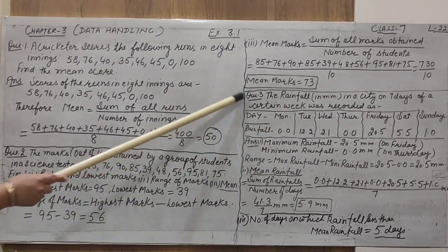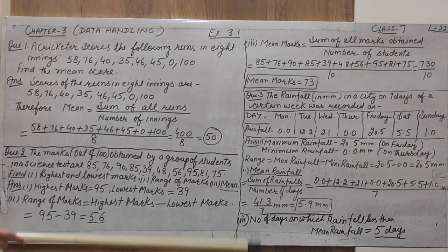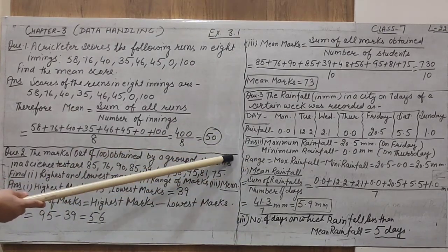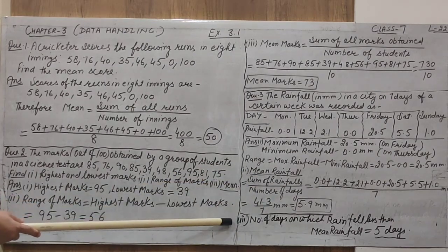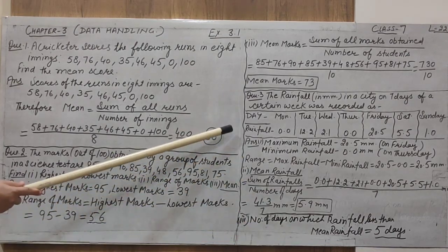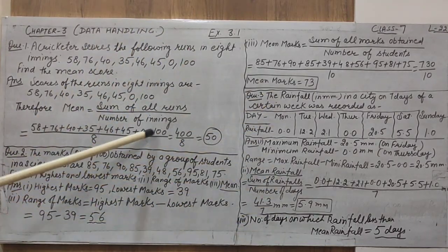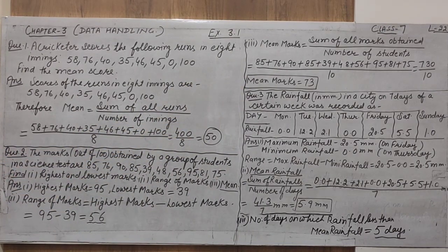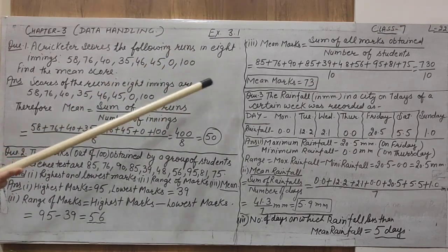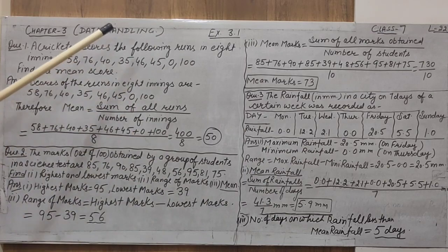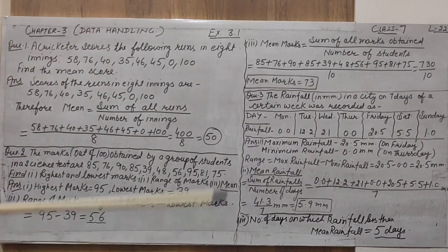Based on these observations, there are many questions you can find and answer. I hope you understand how to find the maximum, minimum, range, mean, and other observations from the data. The previous chapter on decimals is also used here — the calculation and addition must be correct, because the mean is totally based upon addition. Now students, complete your exercise 3.1 on data handling.